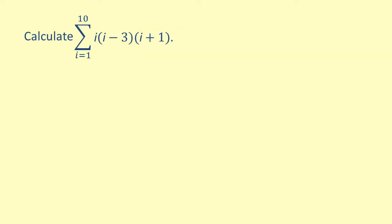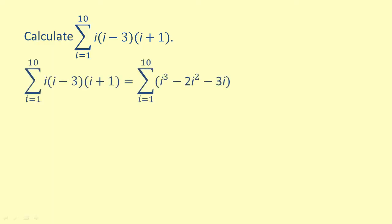Here, we are asked to calculate the sum of a polynomial. Let's first multiply the three factors. That gives us the sum of i cubed minus 2i squared minus 3i from i equals 1 to 10.